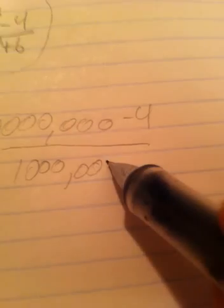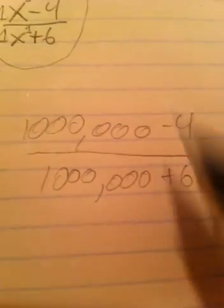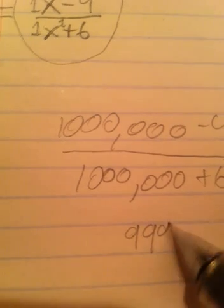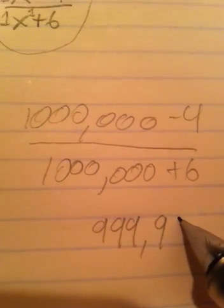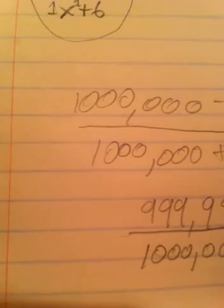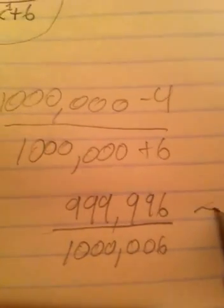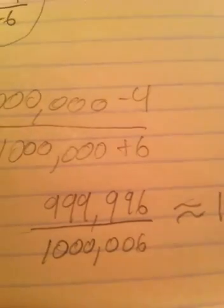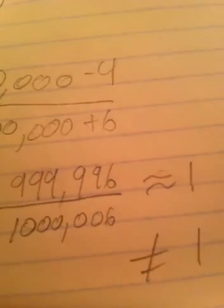I'll give you an example. For example, let's plug in a million for x. We're going to get 1,000,000 minus 4 over 1,000,000 plus 6. Now, that's 999,996 over 1,000,006. This is approximately 1. It's really, really, really close to 1, but does not equal 1. It's really close to 1, but it does not equal 1.